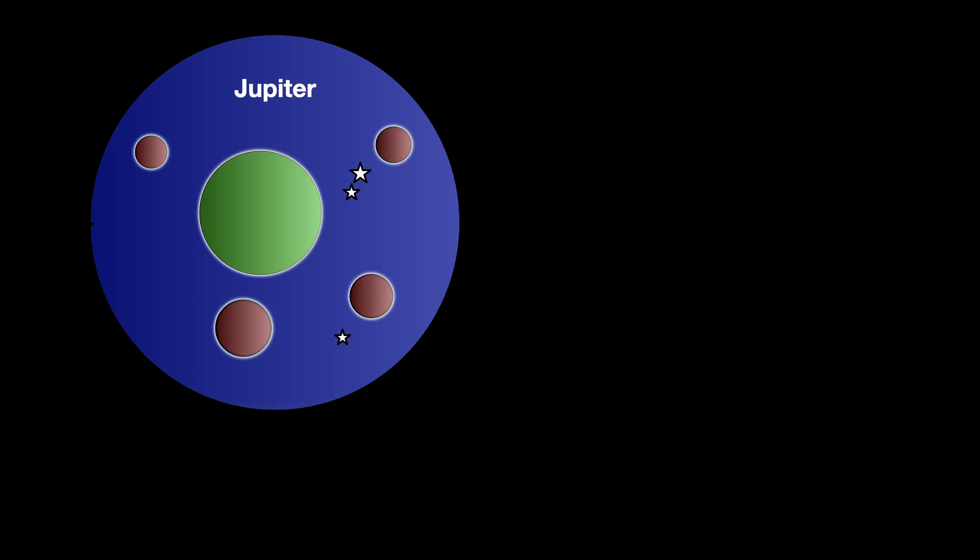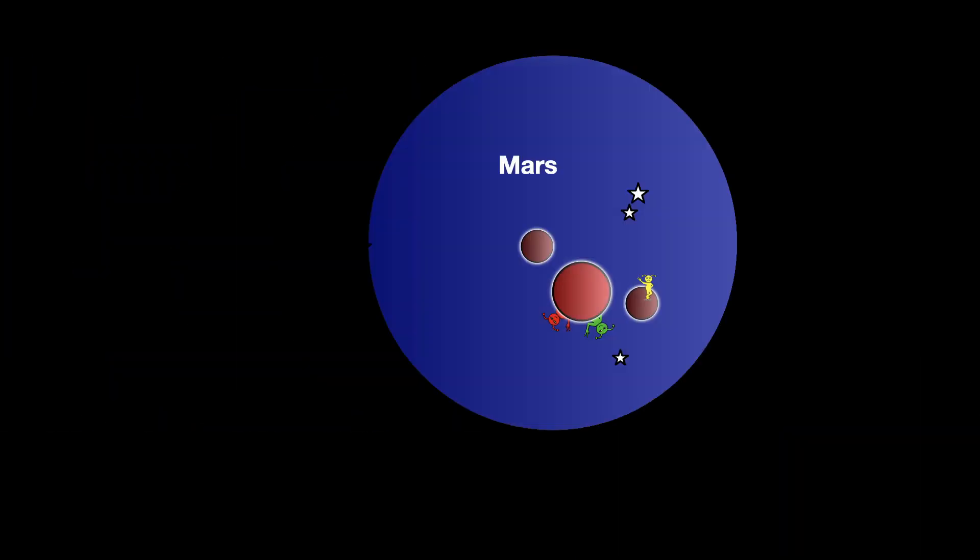He points his telescope at Venus. No moons. Then he looks at Mars. Two moons. Incredible!